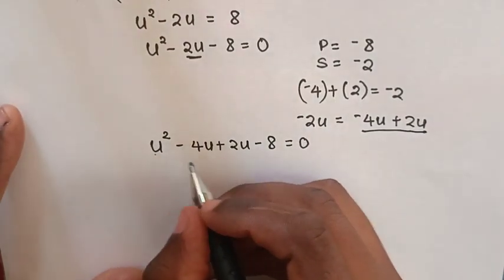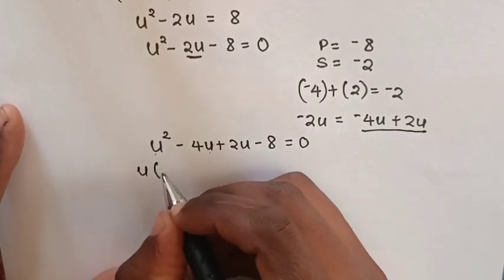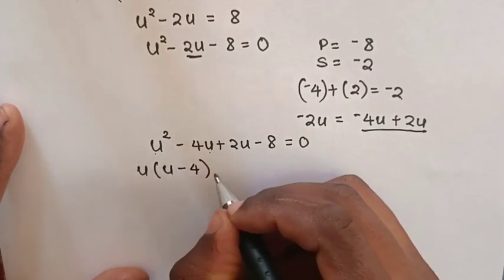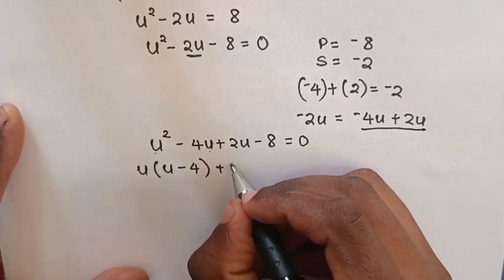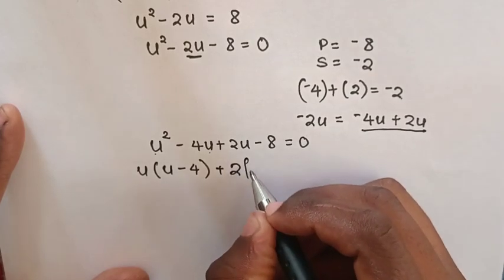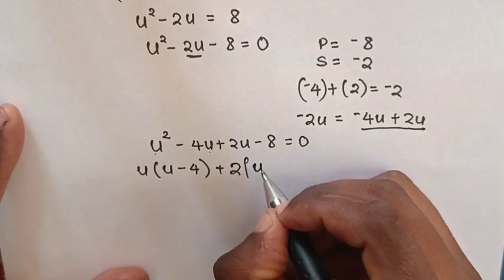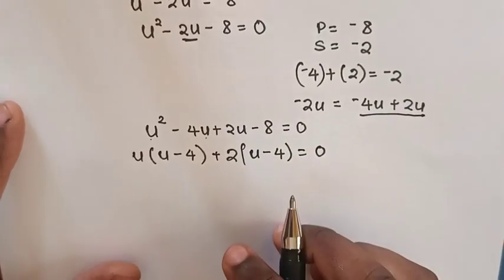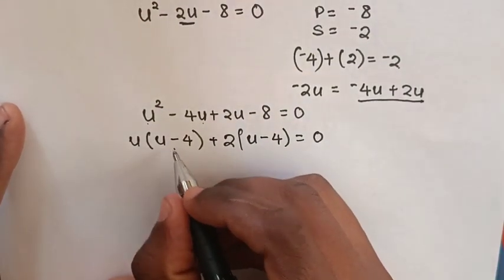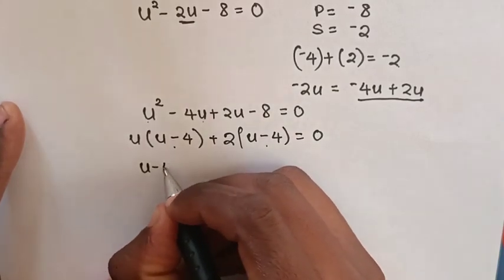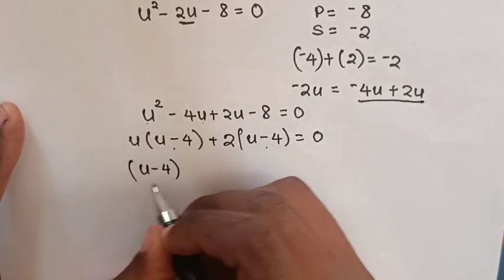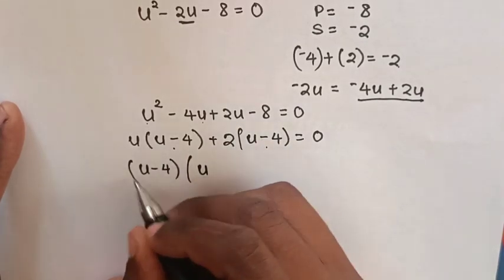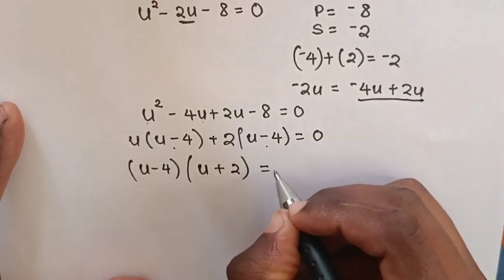Here u is common, so we take u out of the bracket — this divided by this is u, this divided by this is negative 4. Then 2 is common, so we take 2 out of the bracket. Here u minus 4 is common, so we take (u minus 4) out of the bracket — this divided by this is 2, so it will be plus 2 in bracket, equal to 0.